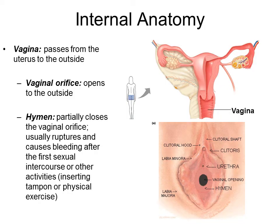Outside the uterus, the connection to the external opening is the vagina. The vaginal orifice is that opening. It is initially covered by the hymen, which is usually ruptured during first sexual intercourse or insertion of a tampon, though sometimes extreme physical exercise may tear it.